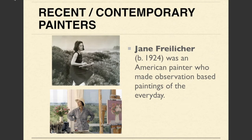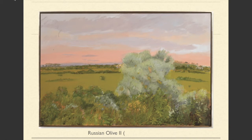Let's talk about some more recent as well as contemporary painters who work in an Impressionistic style. One of these artists is Jane Freilicher, an American painter who made observational-based paintings of the everyday. I wouldn't consider her an Impressionist per se, but her way of working is inspired by the Impressionists. This is Russian Olive II. One of the differences from the Impressionists is that there's less use of optical color mixing — the paint application is a little flatter. You're not seeing as much of the different color marks placed next to each other to create a new color, maybe somewhat in the bushes, but definitely not elsewhere.